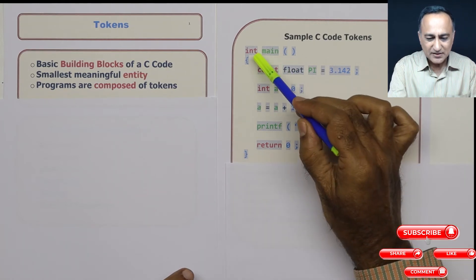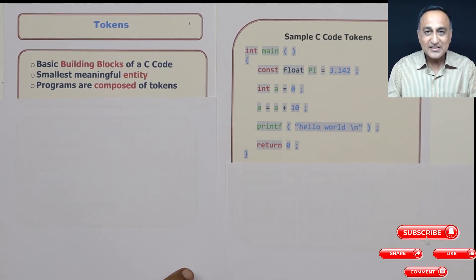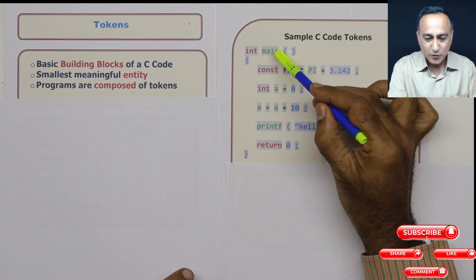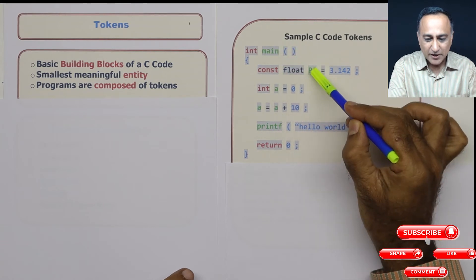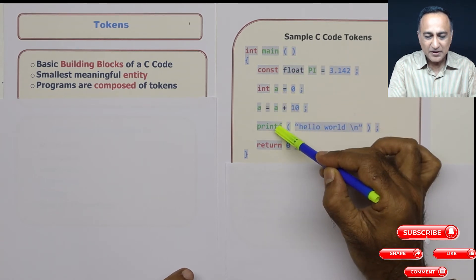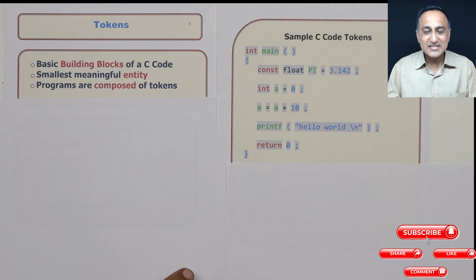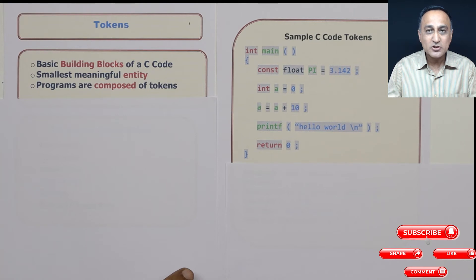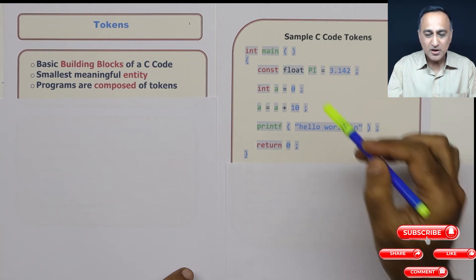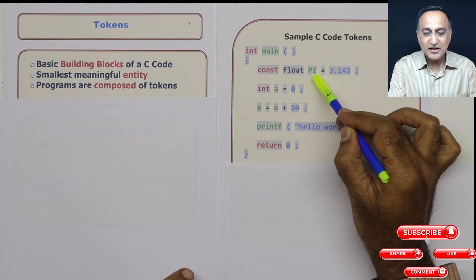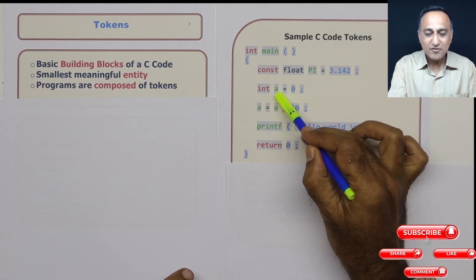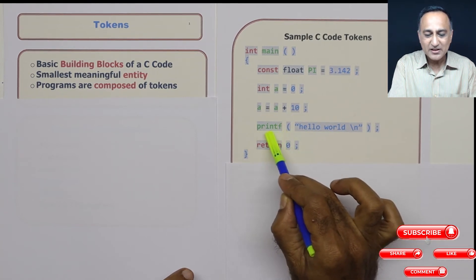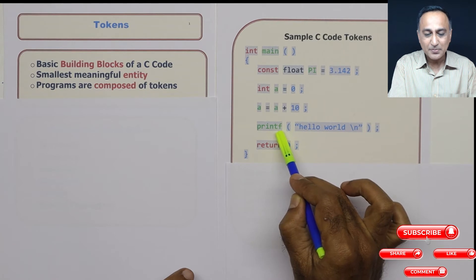Once we look at the keywords like int and const, let's look at the second type of components or tokens. If you look at the word main, pi, a, printf, these are all examples of identifiers because these are names given by the user or the developer of the code. For example, for pi I have given it capital PI, the variable I have named as a, the function to print this message Hello world I have given the name printf.